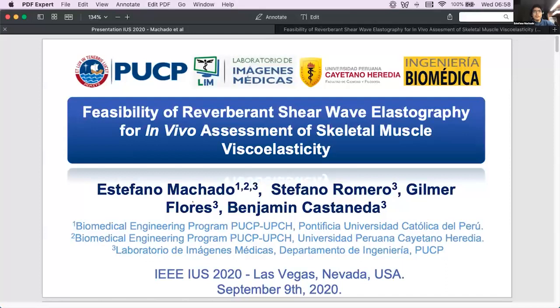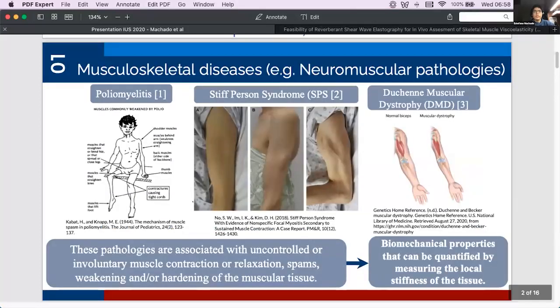So let's start by talking a little bit about musculoskeletal diseases. For example, neuromuscular pathologies like poliomyelitis or Steverson syndrome or Duchenne muscular dystrophy are often associated with an alteration of the biomechanical properties of muscles that can be quantified by measuring the local stiffness of the tissue.